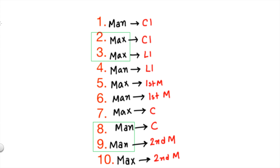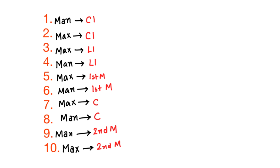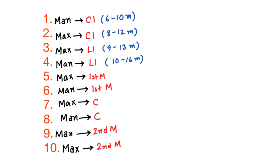Mandibular central incisor erupts at six to ten months, and maxillary central incisor at eight to twelve months. Then maxillary lateral incisor at nine to thirteen months, mandibular lateral incisor at ten to sixteen months, and maxillary first molar at thirteen to nineteen months.